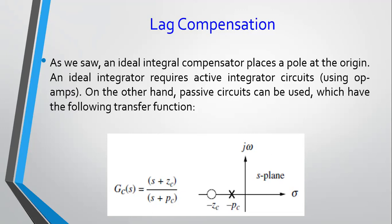Now, the issue with an ideal integral controller is that it requires active integrated circuits — for example, op-amps — and this means your controller will consume energy, which can be quite costly to implement. So if you want to use passive elements to implement your compensator, then the counterpart of the PI controller is a lag compensator.